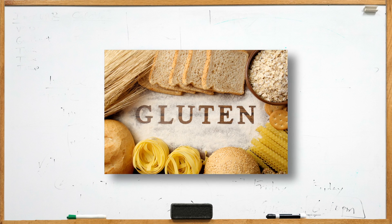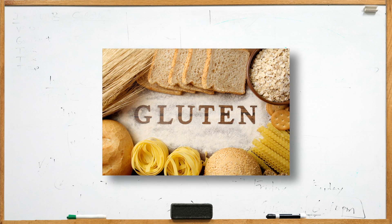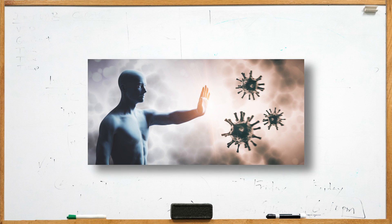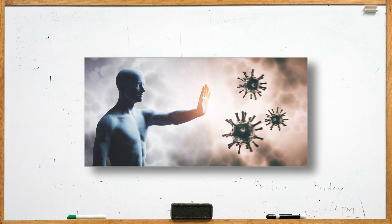Gluten. Someone who eats a lot of gluten increases the risk of protein particles entering the blood. The immune system recognizes this as an intruder and takes care of the problem, but increased gluten consumption over the years can cause the immune system to attack healthy tissue.